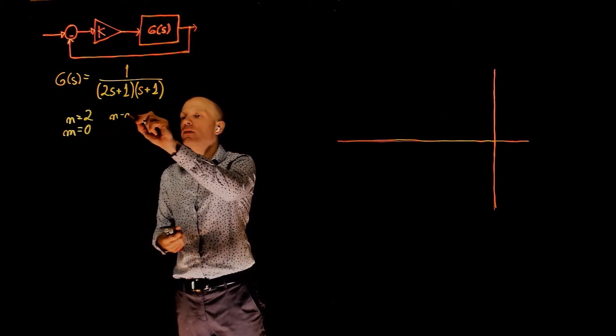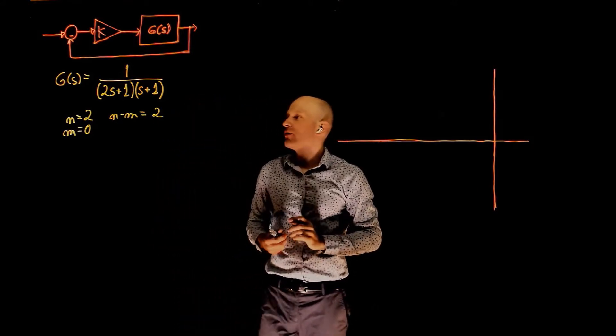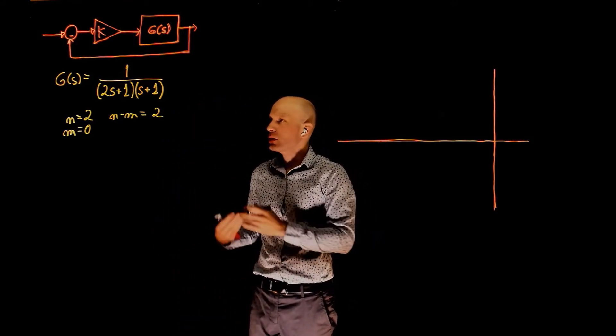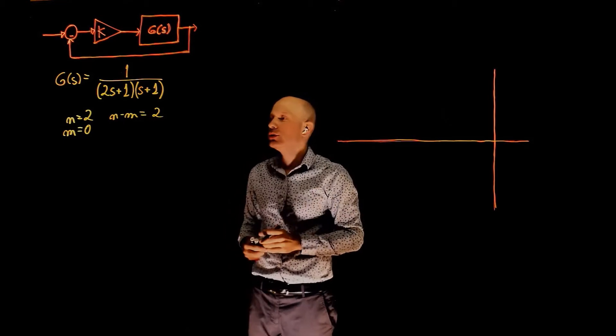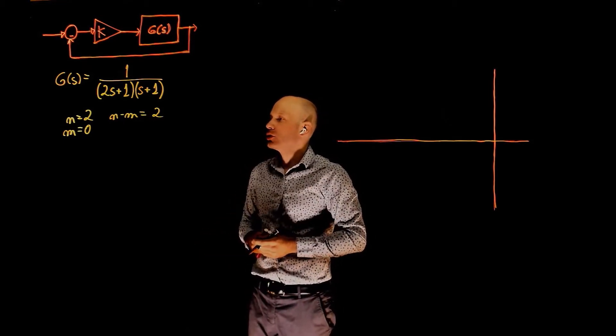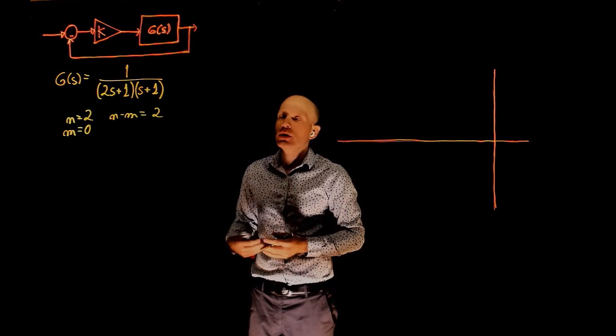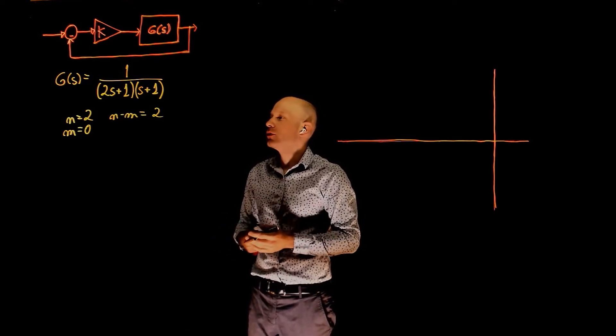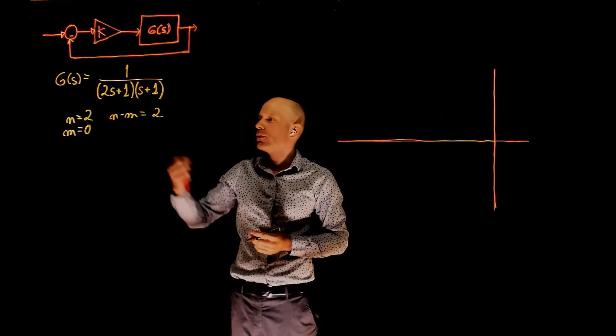So n minus m equals 2. We have an excess of two poles and those poles don't have a zero to go to, they will have to go to infinity. When they go to infinity they do so following asymptotes. We now need to determine the angle of those asymptotes that will bring these two poles to infinity.